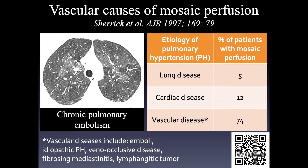Small airways disease is the most common cause of mosaic perfusion, but vascular diseases also can cause mosaic perfusion and tend to look somewhat different. Airways diseases are more patchy and lobular, whereas vascular diseases are non-lobular, often larger swaths of lung, often peripheral. Differential diagnosis includes pulmonary hypertension, and vascular causes include chronic thromboembolic disease, idiopathic pulmonary hypertension, veno-occlusive disease, fibrosing mediastinitis, and others.